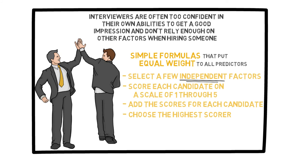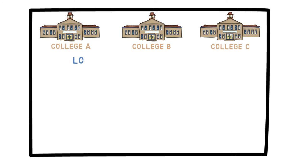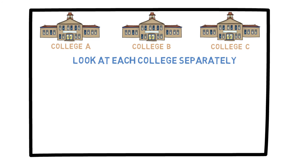Then you simply add the scores for each candidate and choose the one with the highest total. This may seem very simple, but it is useful in many situations. Oftentimes our results using this formula are different from what they would have been had we trusted our intuitions. For another example, say you get accepted to three different colleges, A, B, and C. You would look at the utility for each college separately, just like in the previous example.